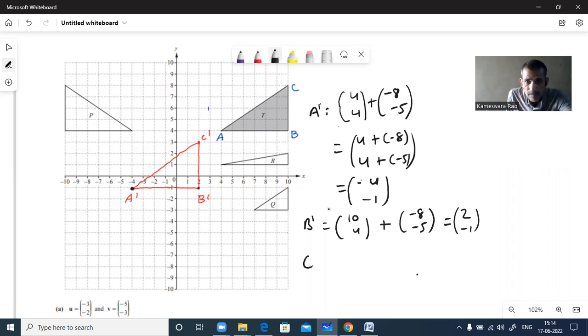C dash is same. First the C coordinates you see. What are the C coordinates? 10 comma 8. And our translation vector is minus 8 minus 5. Okay you just add what you will get, 10 minus 8 is 2, 8 plus 5.